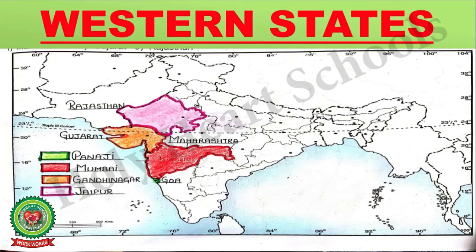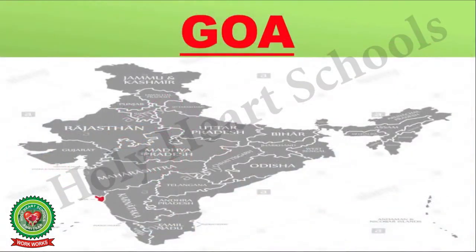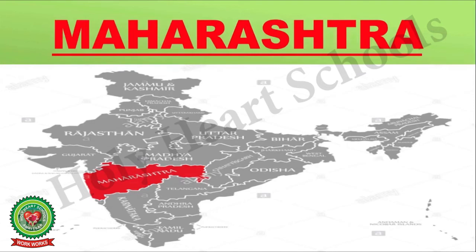Now, let's discuss these Western states with their capitals and their neighboring states. Goa is one of the smallest states in India. Its capital is Panaji. It shares its boundary with Maharashtra and Karnataka. The next state is Maharashtra. Maharashtra is the second most populous state in India. Its capital is Mumbai. It is bordered by the states of Gujarat, Madhya Pradesh, Chhattisgarh, Telangana, Karnataka and Goa.